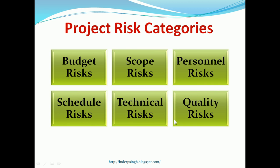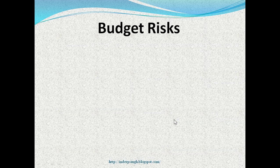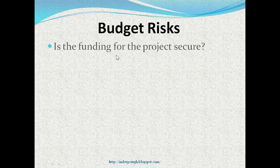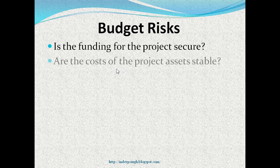Now let us see the questions to ask under each project risk category. First is budget risks. Is the funding for the project secure? Are the costs of the project assets like hardware needed, software needed and people related costs stable?